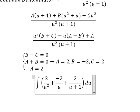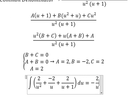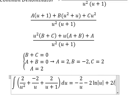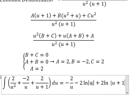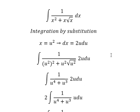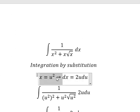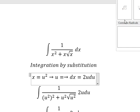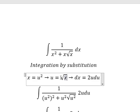Now we have the final answer. Recalling that u equals the square root of x (from taking the square root of both sides of x equals u squared), we substitute back to express the result in terms of x.